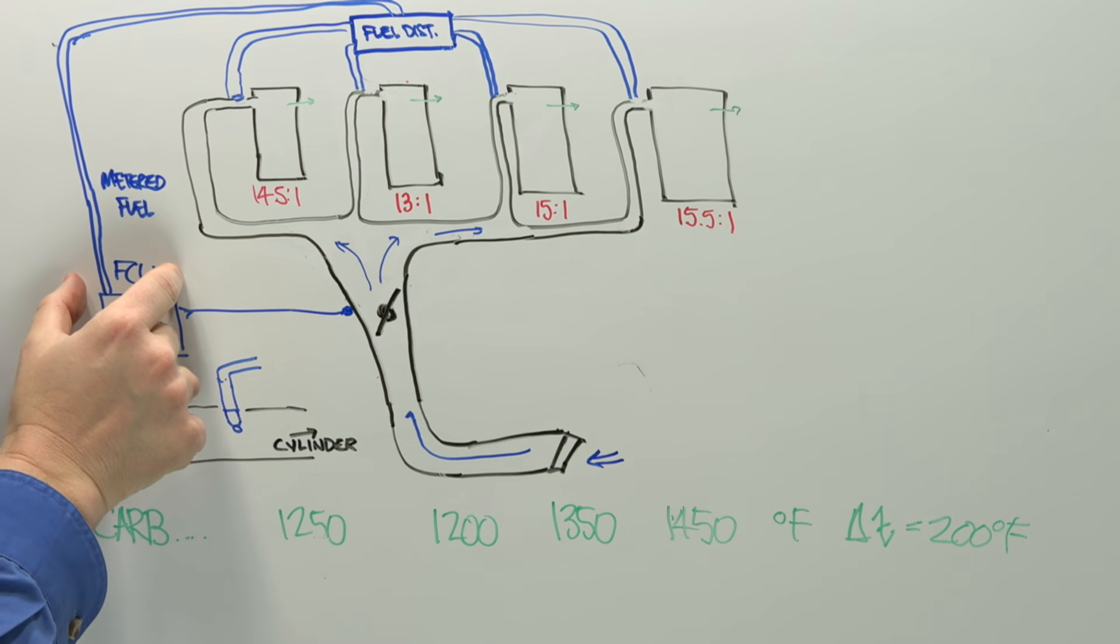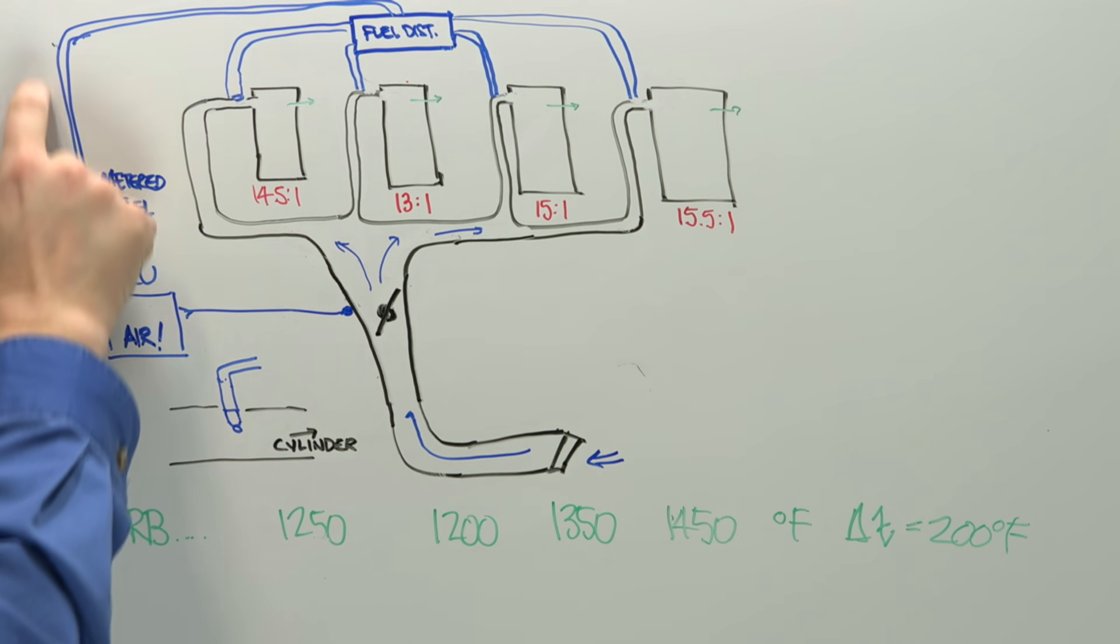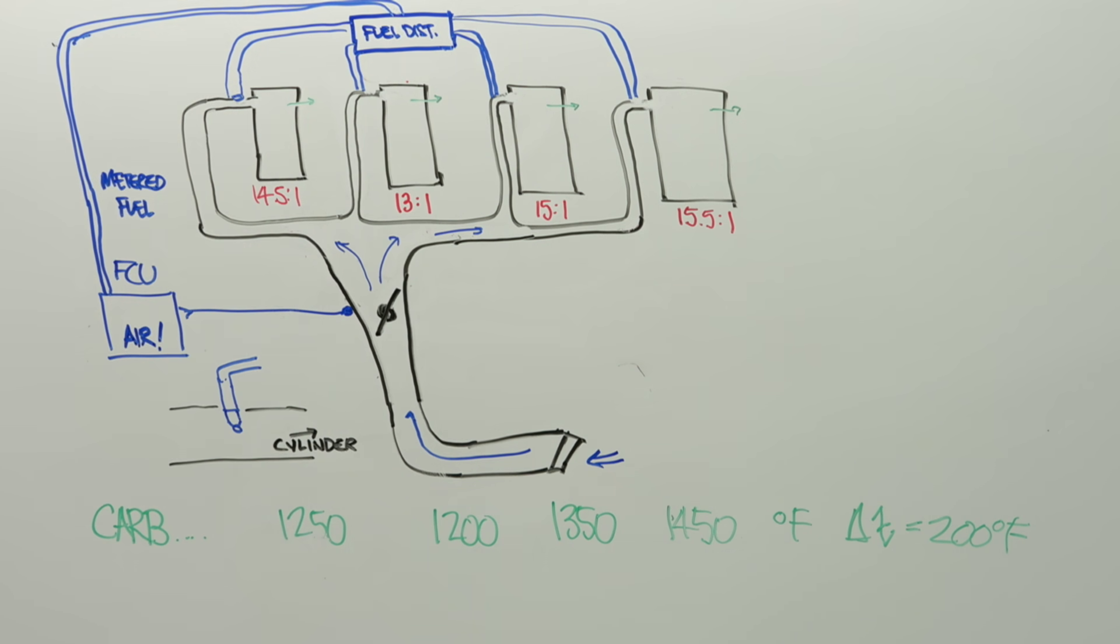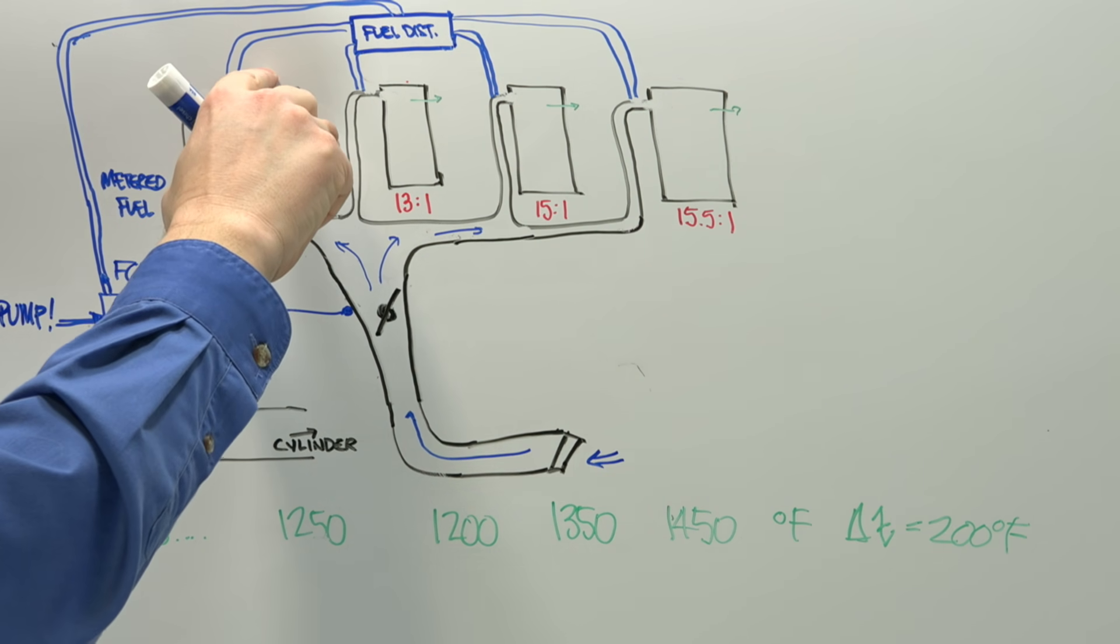So this fuel control unit sends this metered fuel towards the fuel distributor. But there's one more key piece to this, and that is a pump. So what happens is this fuel pump is going to force this metered fuel under pressure towards the distributor and towards these lines.